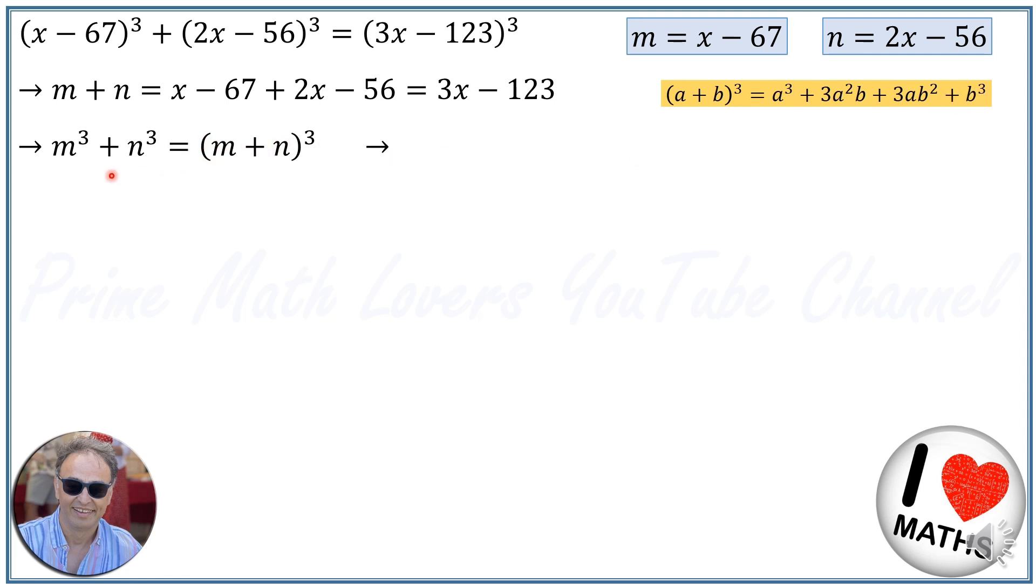The left-hand side m³ plus n³ is equal to m³ plus 3m²n plus 3mn² plus n³. We can eliminate m³ from both sides of the equation, as well as n³ from both sides, and then we will have 3m²n plus 3mn² is equal to 0.